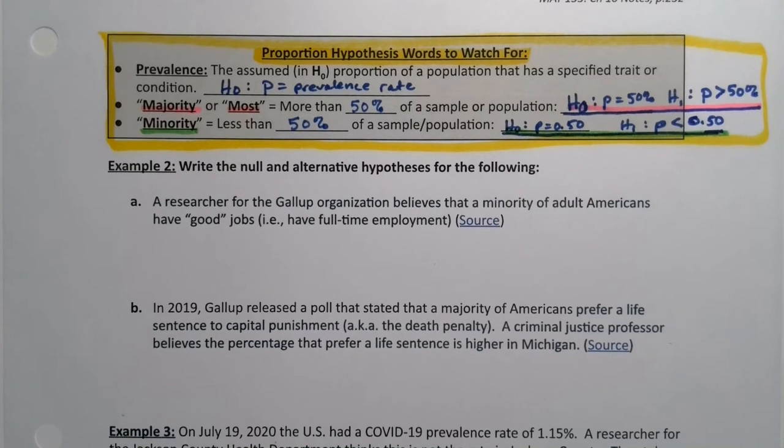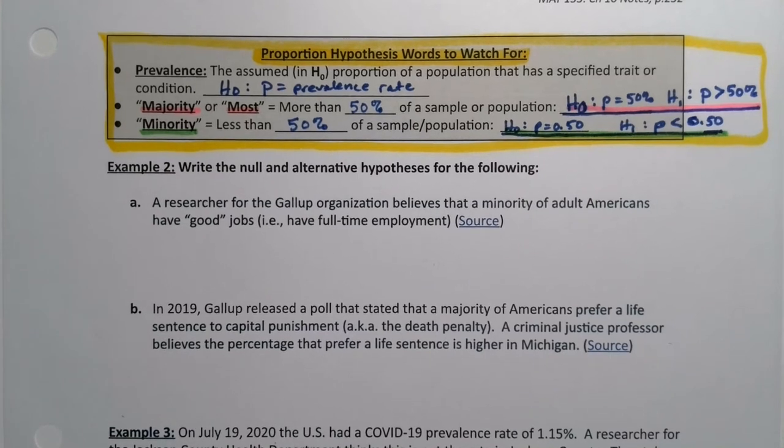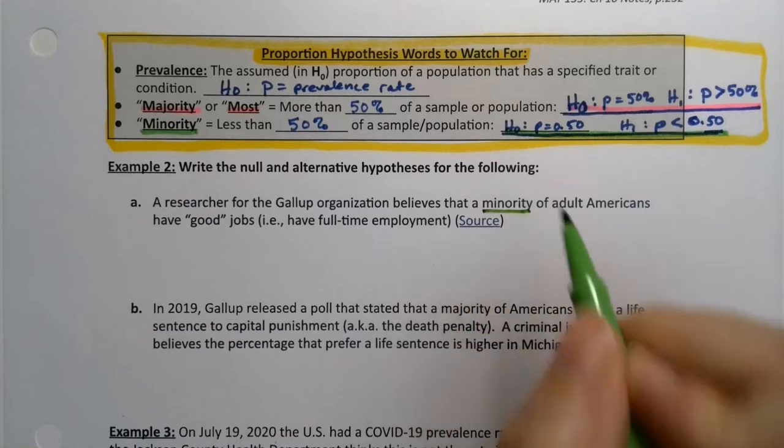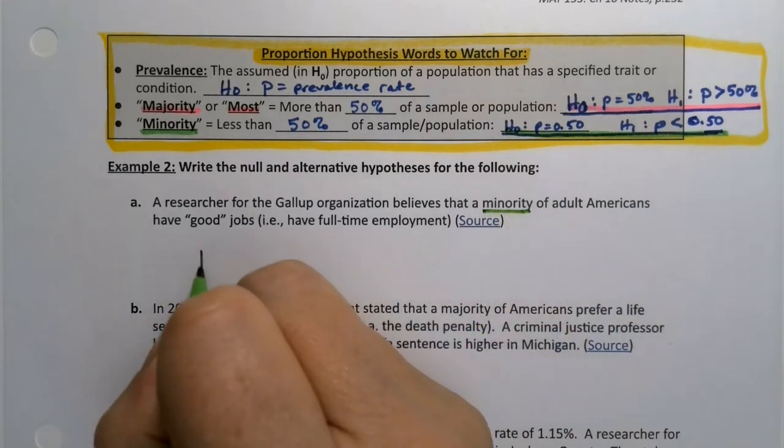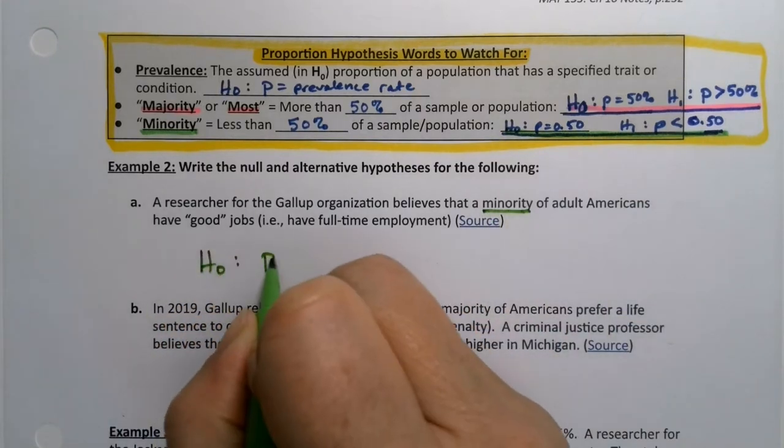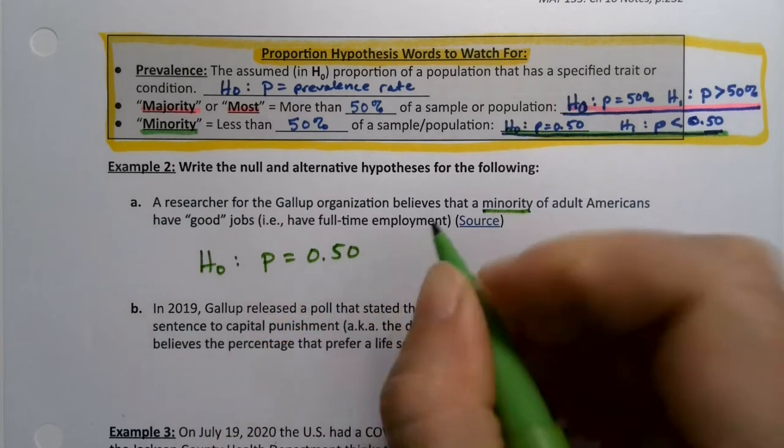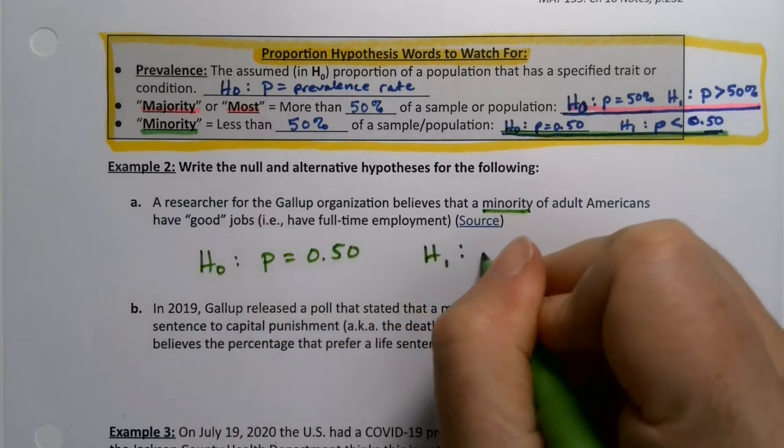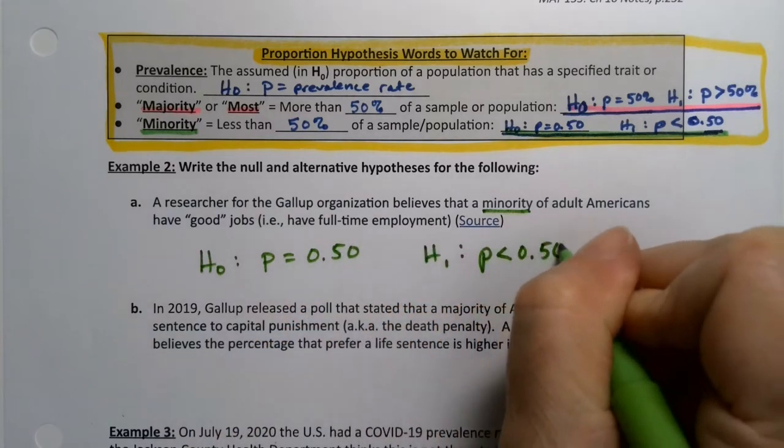So let's read this problem. A researcher for the Gallup organization believes that a minority of adult Americans have good jobs, have full-time employment with benefits. So minority, sneaky. So once you see that, you know it's P equals 0.50 and P less than 0.50. Done.